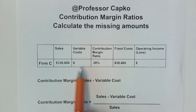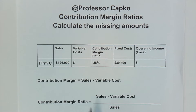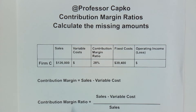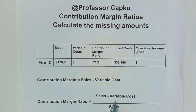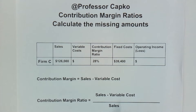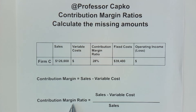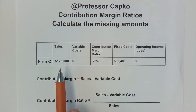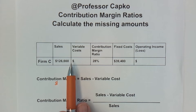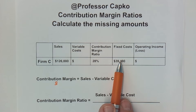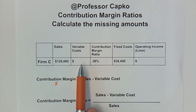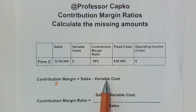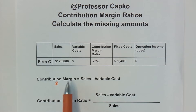To figure this out, we need to use some formulas. Contribution margin is equal to sales minus variable costs, and the contribution margin ratio is sales minus variable costs, all divided by sales. Contribution margin is going to be a dollar figure that tells us how much of the sales, after variable costs are taken out, go toward covering fixed costs and operating income.